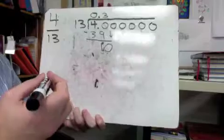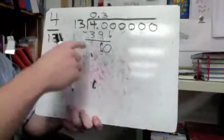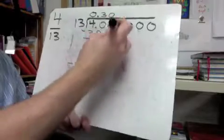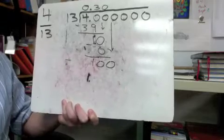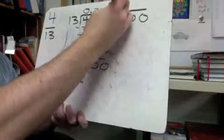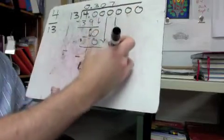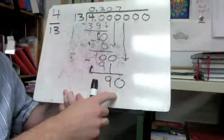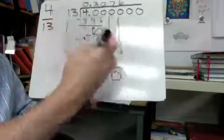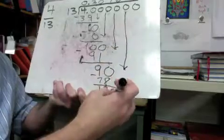A step many people get stuck on: can thirteen go into ten? It can't, but you can only bring down one zero at a time. So thirteen can't go into ten — that's a zero. Zero times thirteen is zero, take away, equals ten; bring down the next zero. Thirteen into one hundred — I think that's seven times; seven times thirteen is ninety-one, take away equals nine, bring down the next zero. Thirteen into ninety — that has to be six; six times thirteen is seventy-eight, take away gives twelve. Bring down zero.